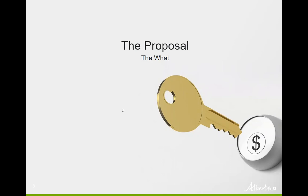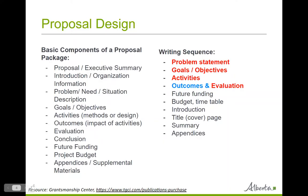In part one, you did your research and preparation, including scanning your environment, identifying a clear need and an opportunity in your community, and you concluded that you have a good pitch to a granting organization. So now you are ready to proceed to proposal writing. The information that needs to be included in a grant proposal and the order of this information in the proposal are fairly consistent. However, the sequence that you write the information is not the same as the order of the information in the proposal.